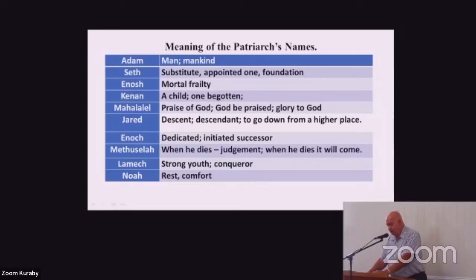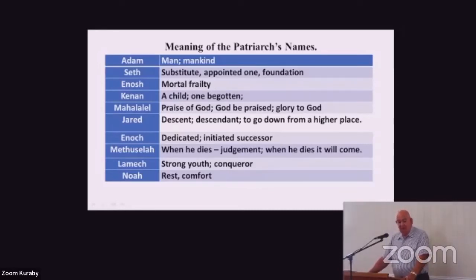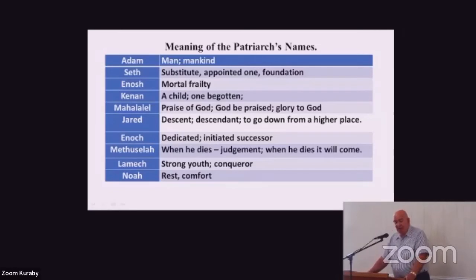Enoch was Jared's fruit of faith. His name means 'dedicated or initiated successor' — he was the first to teach mankind that whoever walks with God will obtain eternal life. There is a way to reach heaven without dying, by transfiguration and ascension — being caught up. Elijah went the same way. Enoch walked with God, and the scripture says he was not, for God took him. That might be a foreshadow of the rapture. Then we have Methuselah — famous for living the longest — but his name means 'when he dies, judgment' or 'when he dies, it will come.'